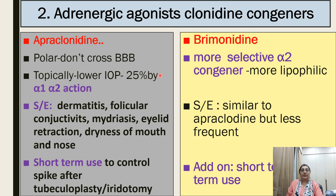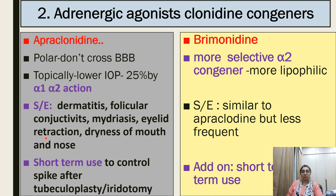Apraclonidine is a clonidine congener; being polar, it does not cross the blood-brain barrier. Topical application lowers intraocular pressure by 25% by acting on alpha-1 and alpha-2 receptors. Side effects include dermatitis, follicular conjunctivitis, mydriasis, eyelid retraction, dryness of mouth and nose. It is used short-term to control IOP spikes after trabeculoplasty or iridotomy.